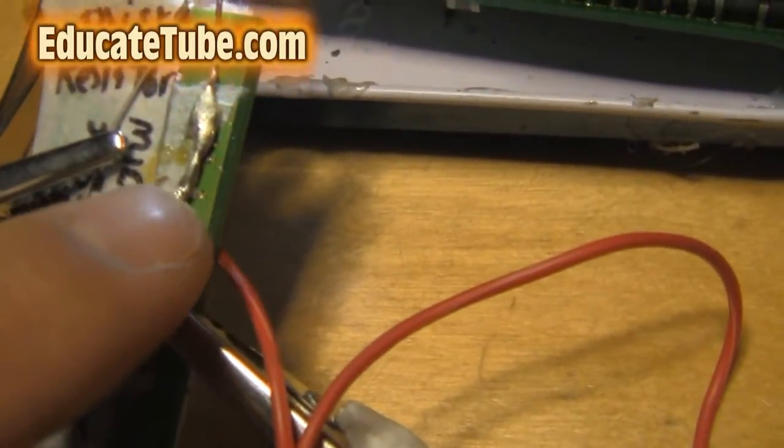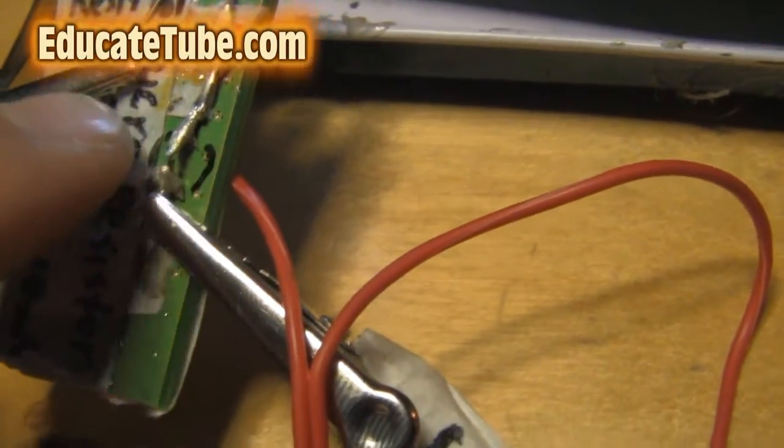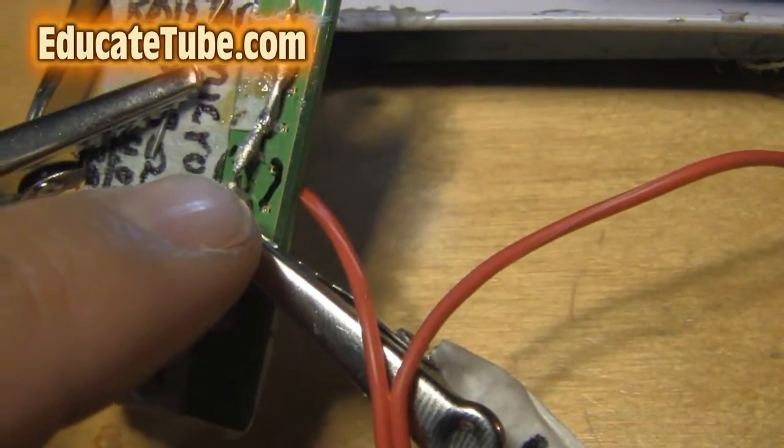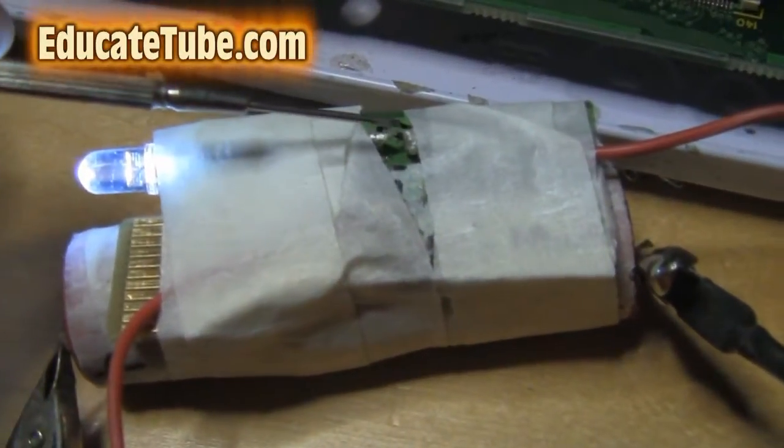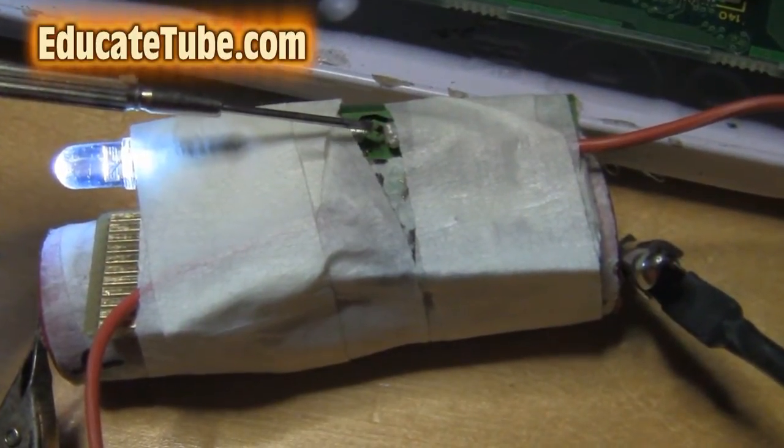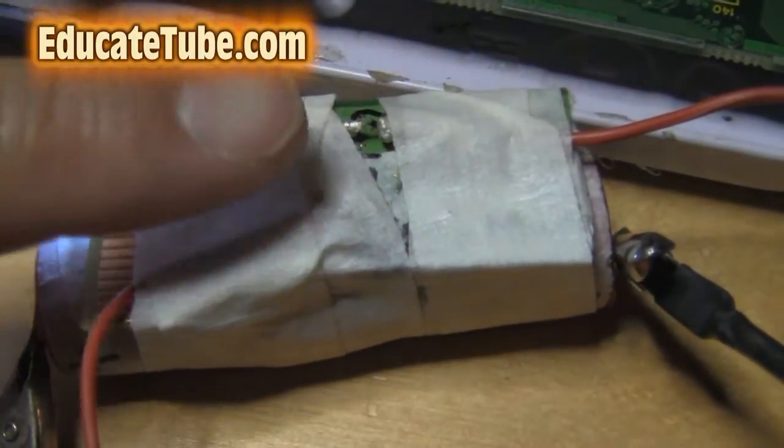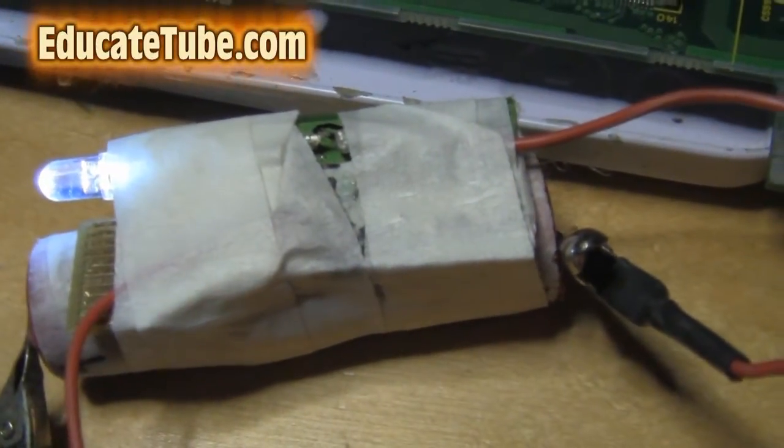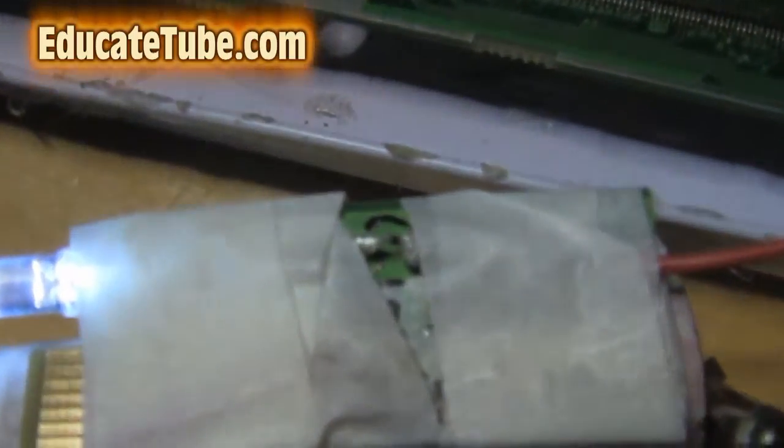You can see it's really tiny - a spec right there. You can see the SMD resistor, very tiny. Look at my finger - there it is, a little tiny black dot.